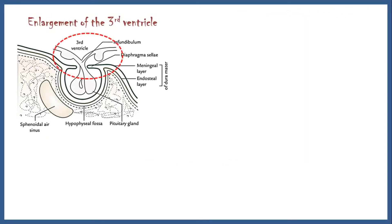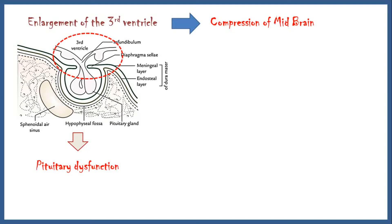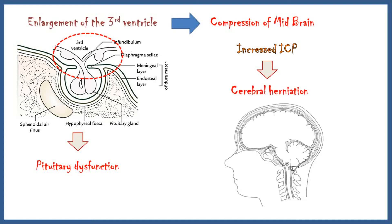Enlargement of the third ventricle down to the pituitary fossa may cause pituitary dysfunction. Enlargement of the third ventricle can also cause compression of the midbrain. In addition, due to raised intracranial pressure, some parts of the brain can get herniated. This image shows the herniation of the cerebellar tonsil through the foramen magnum.